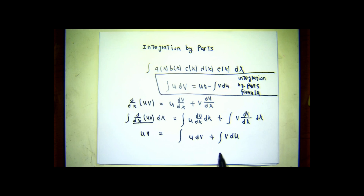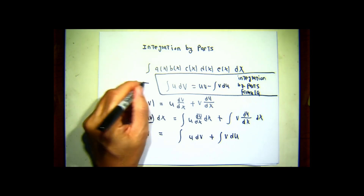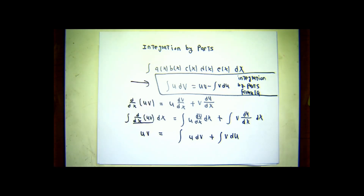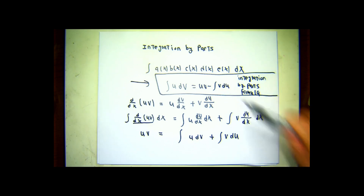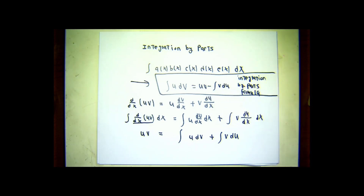If I subtract the integral of v du from both sides, I obtain this formula, which is often just called the integration by parts formula: the integral of u dv equals u times v minus the integral of v du. Hopefully, if things go our way, this new integral will be easier to do than the other one, and we will actually be able to get our hands on v so that we can write this formula out, then do the easier integral.